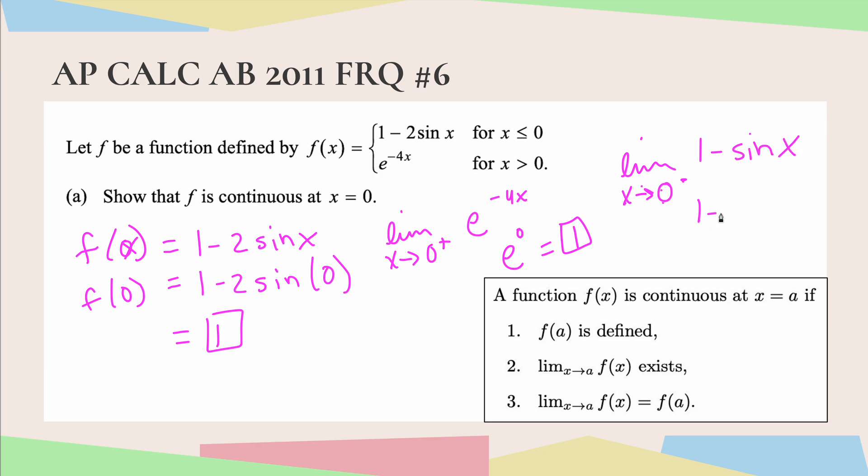So that would be 1 minus 2 sine x. Now plugging in 0 using direct substitution. I apologize, I forgot my 2 there. There we go. So again, sine of 0 is 0, 2 times 0 is also 0, and 1 minus 0 is just 1.